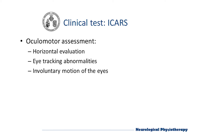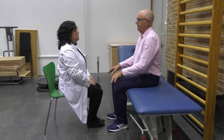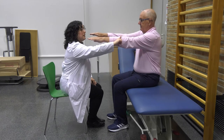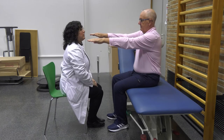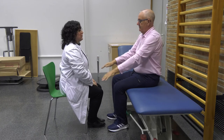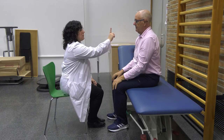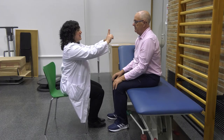In relation to the oculomotor assessment according to ICARS, we consider three aspects. Firstly, we ask the patient to extend the arms to know the average distance at which we will perform the maneuvers. We then ask the patient to look laterally at the examiner's finger and check if nystagmus is evoked and if there are any abnormalities in eye tracking. We can also ask for vertical tracking. Finally, we ask the patient to place both fingers in the field of vision to observe any differences in involuntary motion of the eyes.